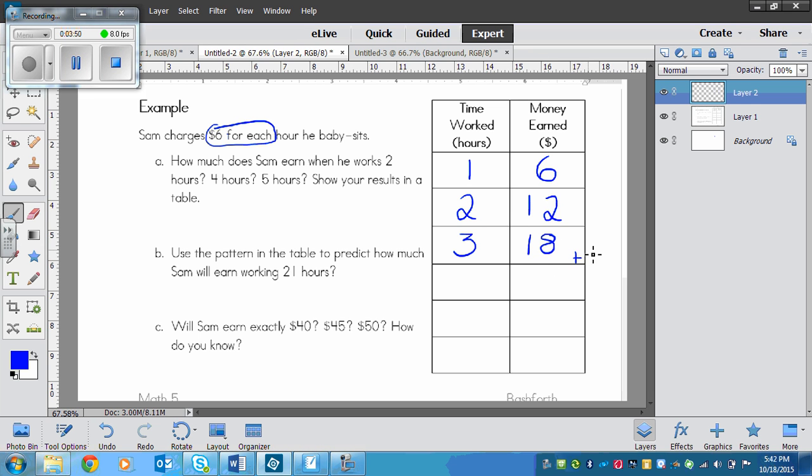If you want to look at it, just add another 6 to this. 18 plus 6 would be 24. Plus 6 again to get our 5 hours would be 30.